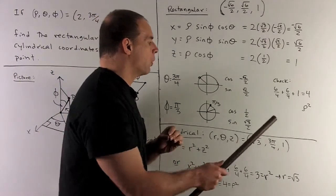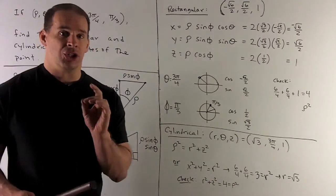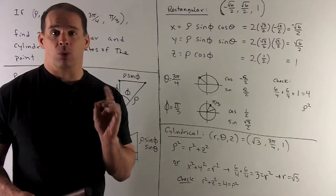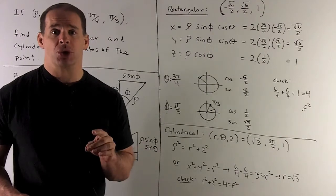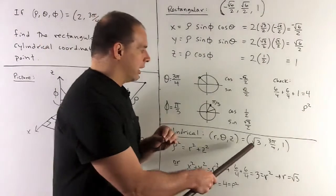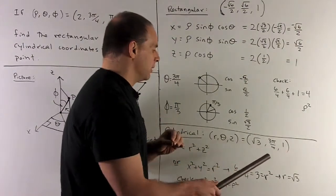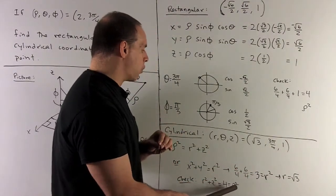So that gives me my cylindrical point: square root of three, three pi fourths, one. As a check, we can check rho squared. Rho squared equals z squared plus r squared. So we see again, we get three plus one gives me four, and that's our rho squared.